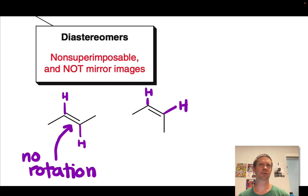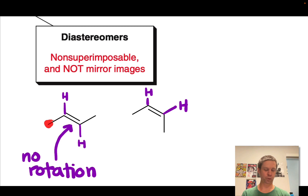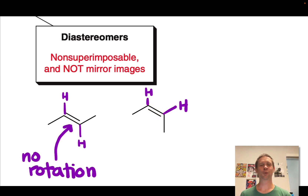With diastereomeric alkenes, we run into a nomenclature issue that we noted earlier for tetrahedral stereogenic carbons, in that these two compounds, based on the naming conventions we've developed thus far, have the same name if we don't incorporate cis and trans. These are both 2-butene. I have 4 carbons in the parent chain and a double bond at position 2 in both of these.